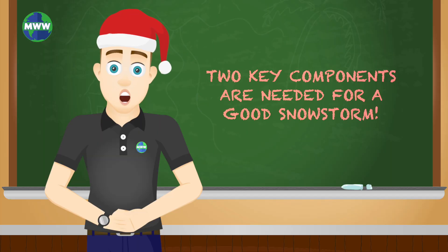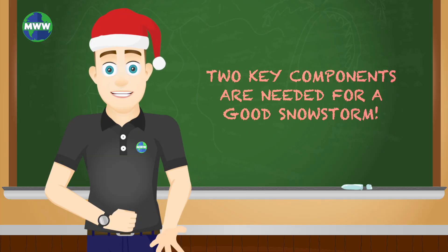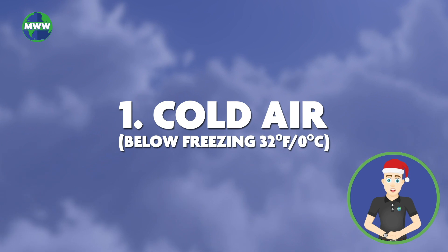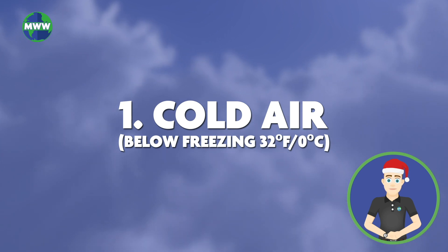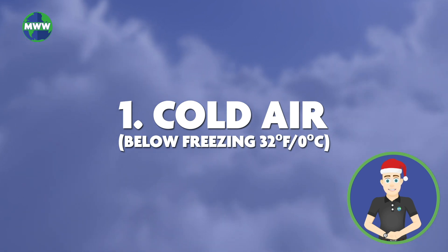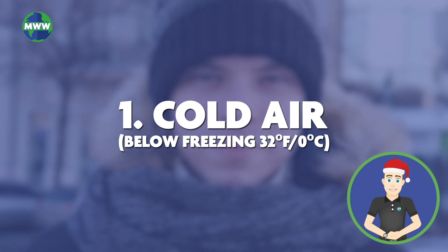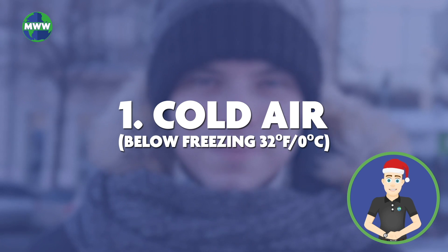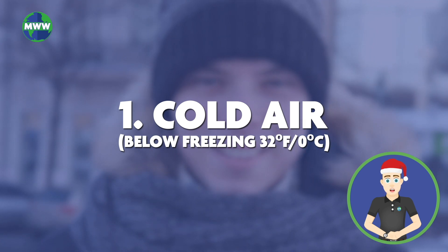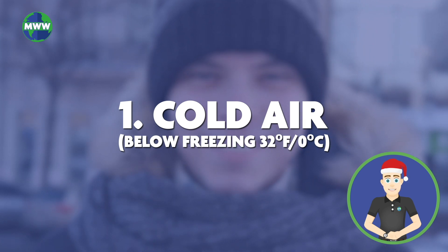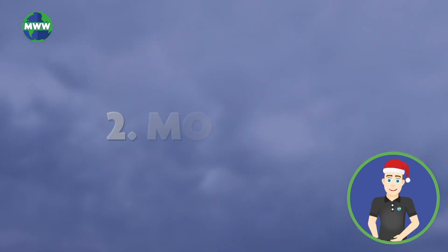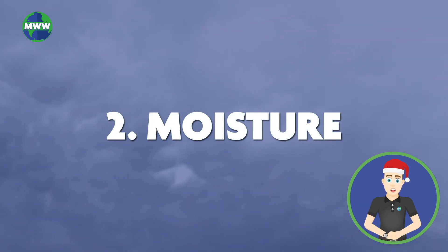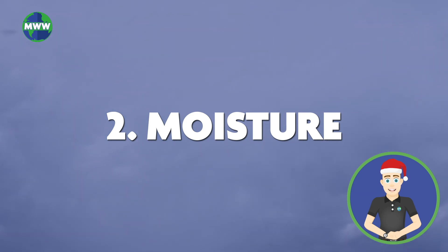Two key components are needed for a good snowstorm. First, there needs to be cold air that's below freezing to make snow. It must be cold in the atmosphere and cold near the ground to prevent snow from melting as it falls. Second, moisture is needed to form clouds and precipitation. Very cold air won't hold much water vapor, so temperatures have to be just right for snow.